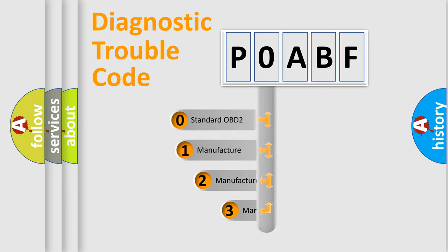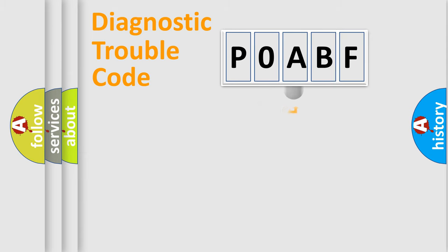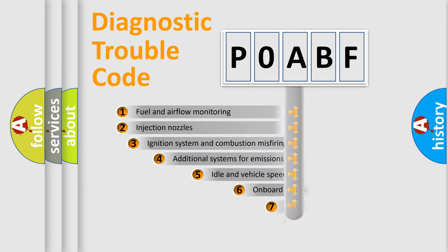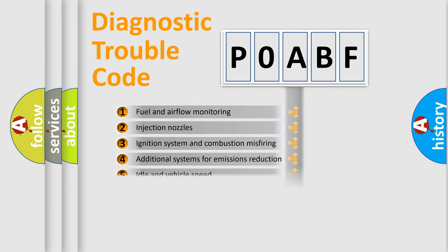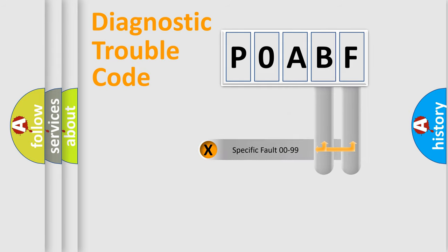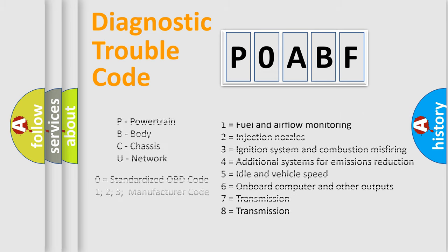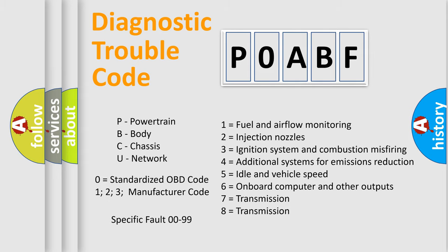If the second character is expressed as zero, it is a standardized error. In the case of numbers 1, 2, or 3, it is a more specific expression of a car-specific error. The third character specifies a subset of errors. This division is valid only for the standardized DTC code, where only the last two characters define the specific fault of the group. Such a division is valid only if the second character code is expressed by the number zero.